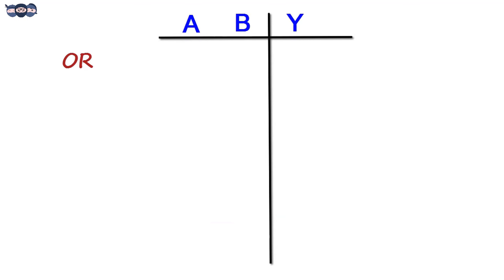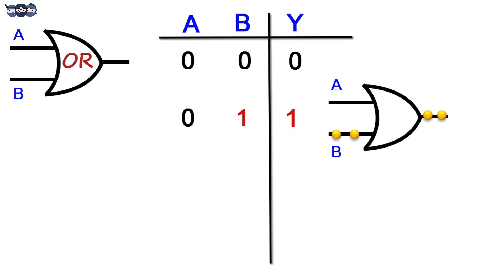Let us see the truth table. For two input OR gate, when both the inputs are low, the output is low. Otherwise, the output is high for remaining three input combinations.